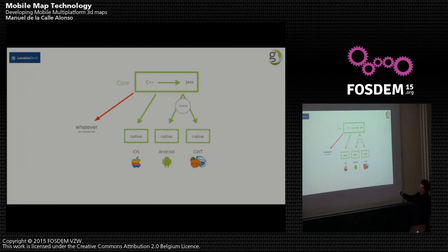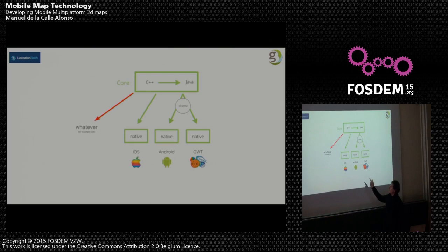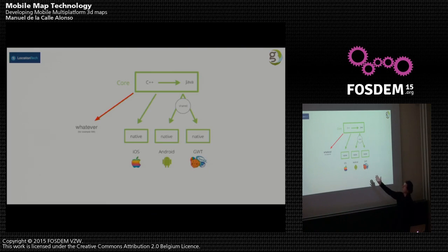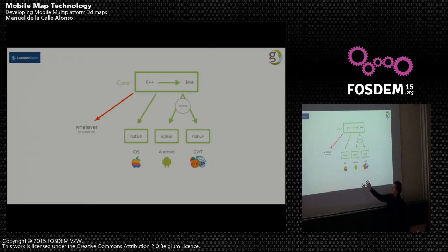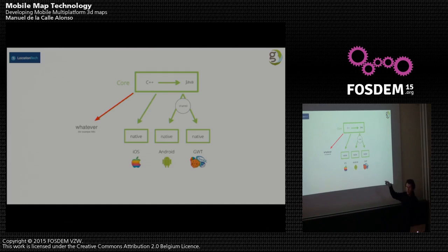Android developers only have to work with a Java API — they don't have to worry about how the C++ code is done. We also make a code translation with GWT to reach all web devices. At the end of the day we have an iOS API, an Android API, and a GWT API. When you start an application you can share a lot of code — for example, the web application and the Android application can share 80% of code because you only have to develop the user interfaces.